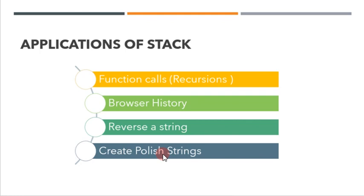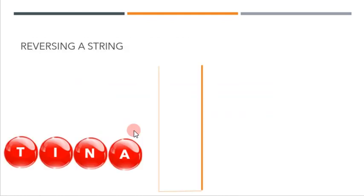To begin with, let's see how a string gets reversed using a stack. This is your given string TINA. Let's put all the characters of this string into the stack. T goes in, then I, N, and A.